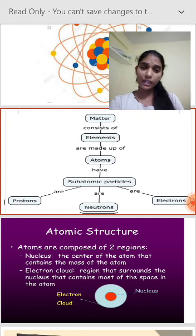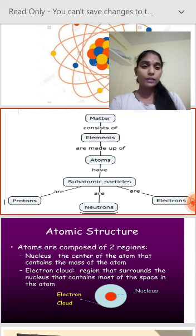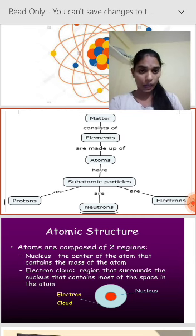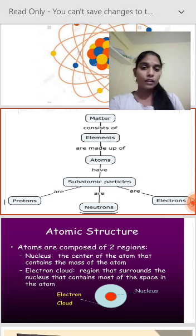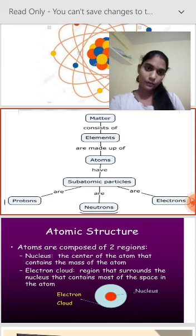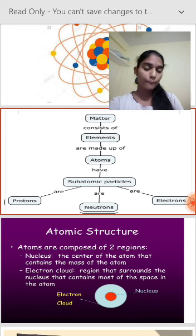First of all, what is meant by Atomic Structure? Atomic Structure refers to the structure of an atom comprising a nucleus in which protons and neutrons are present.